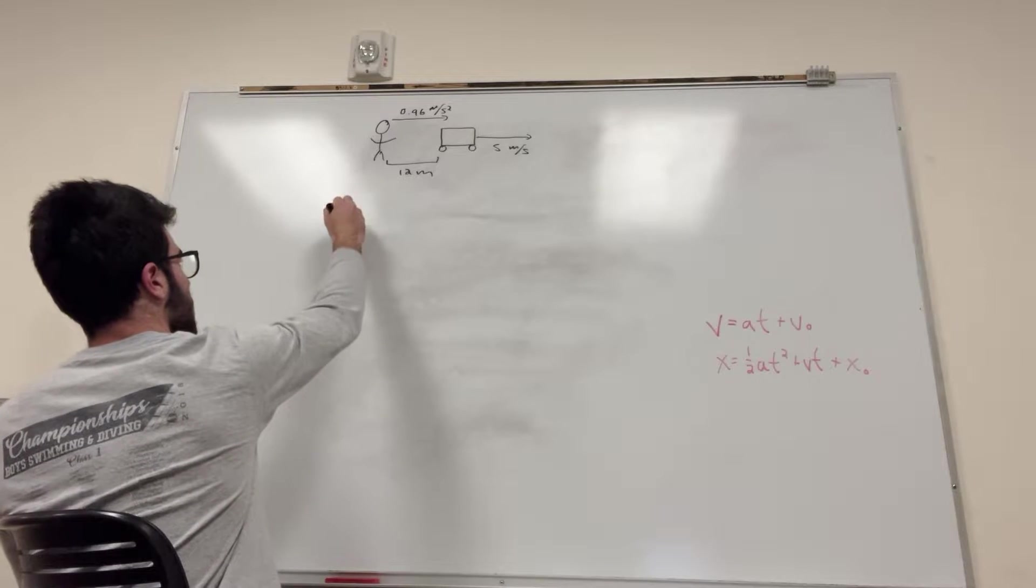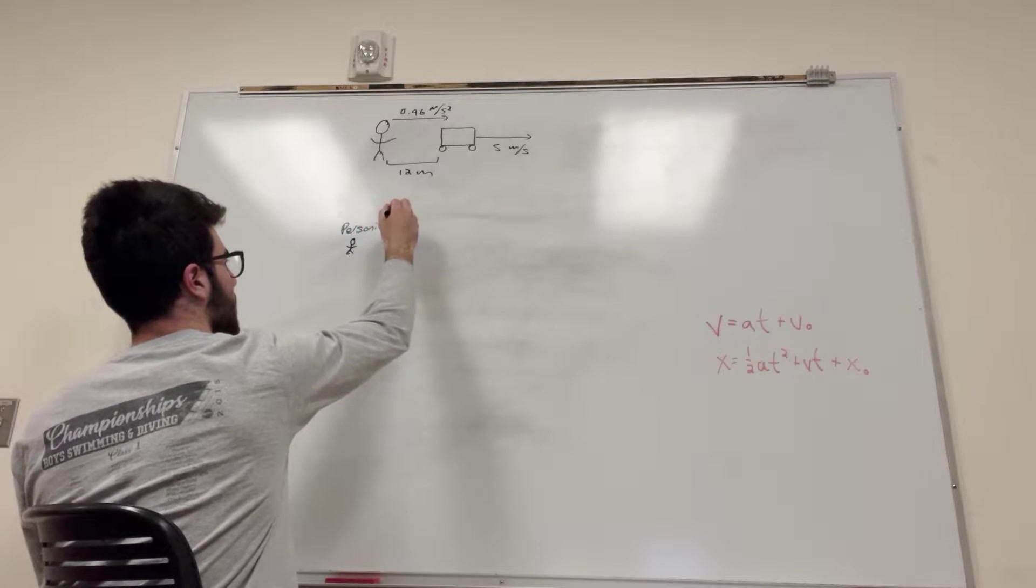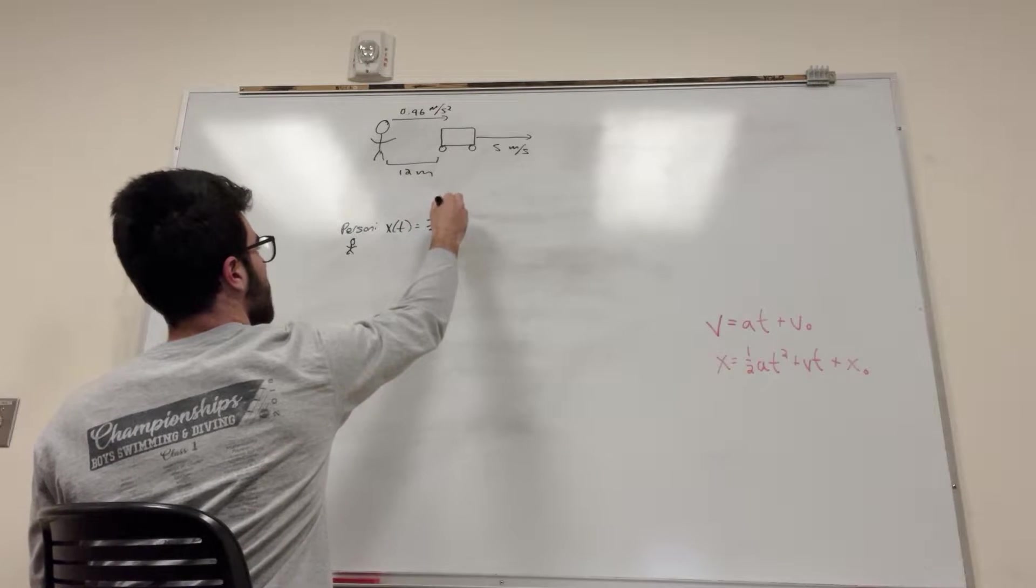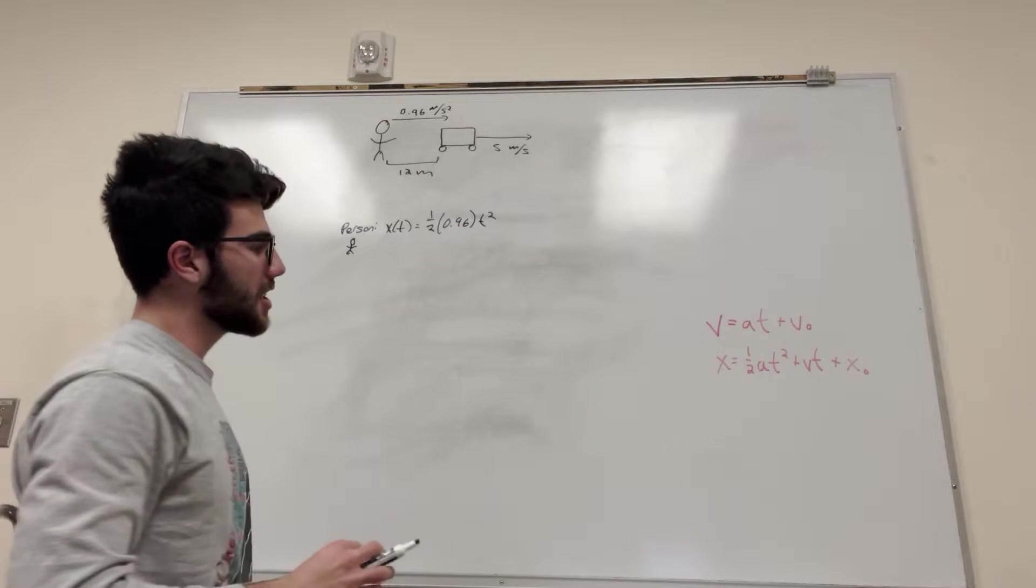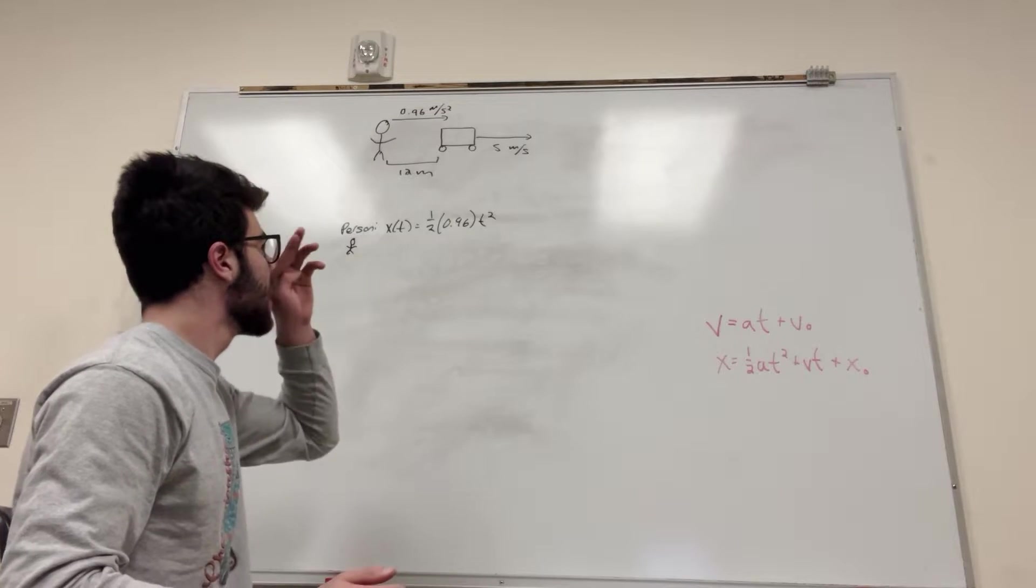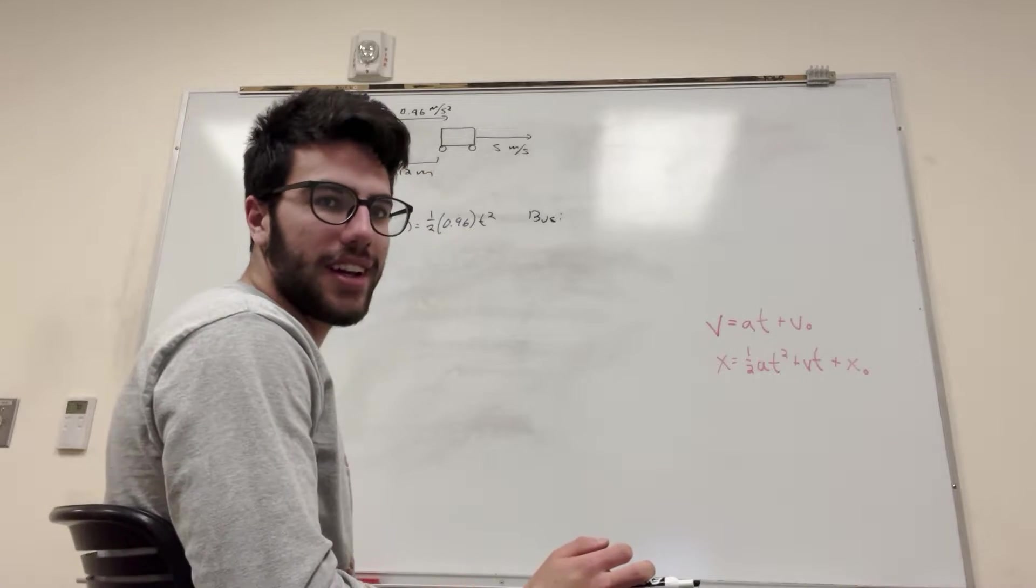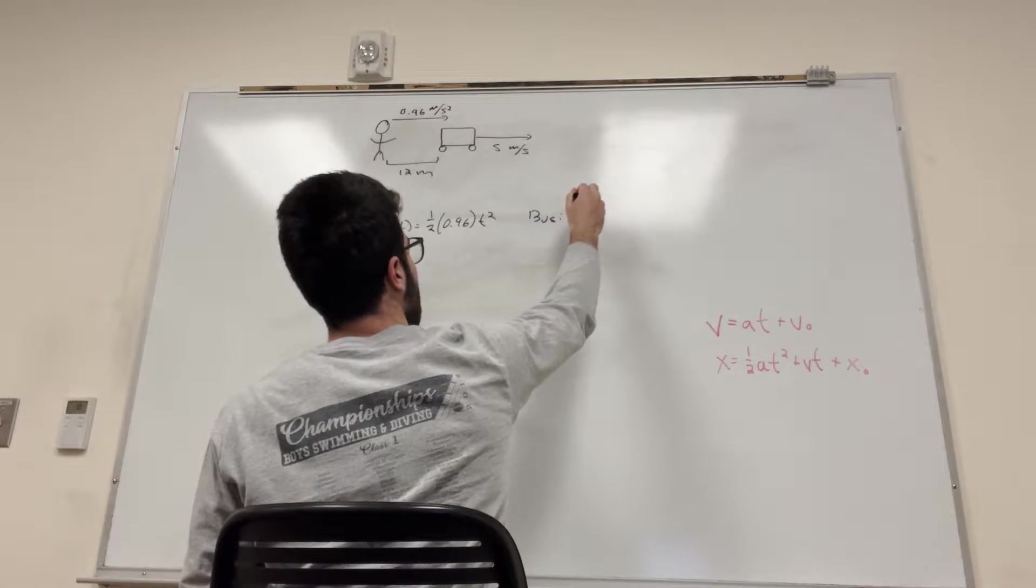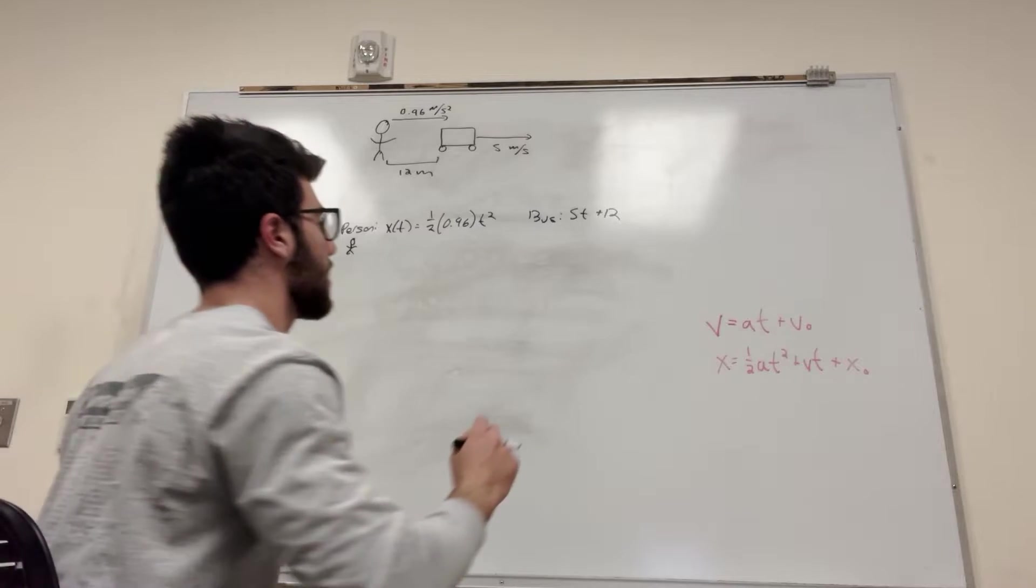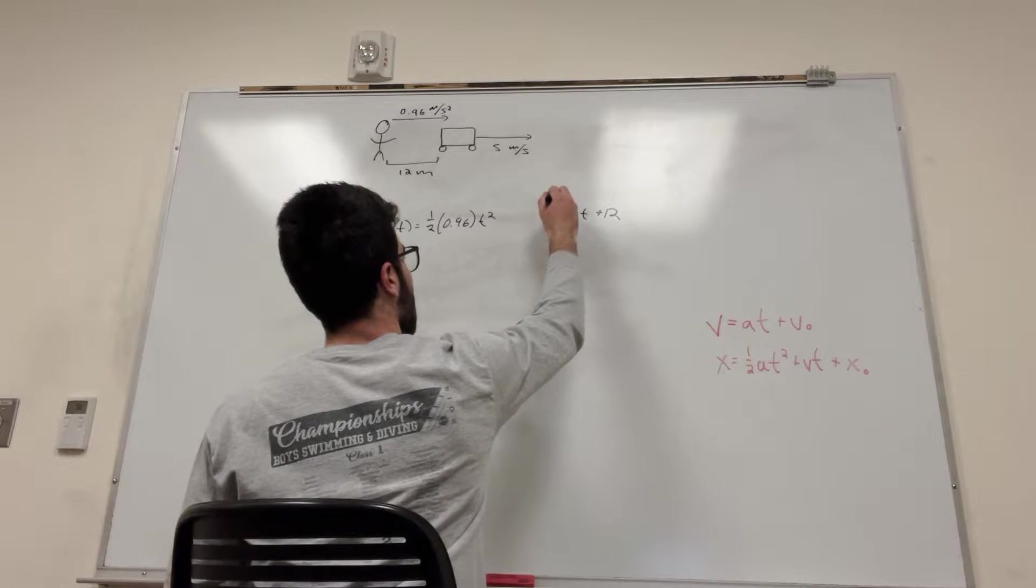For the person, x_d equals one half times 0.96 t squared. Your initial velocity is zero and your initial position is also zero, so this is all you got. The bus has no acceleration, but it does have a velocity of 5 and an initial position of 12, it's 12 meters ahead of you. So x_g equals 5t plus 12.